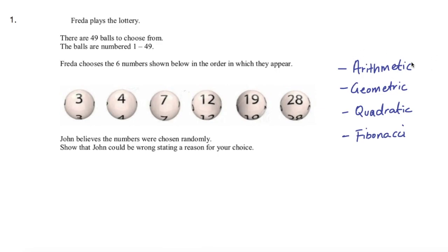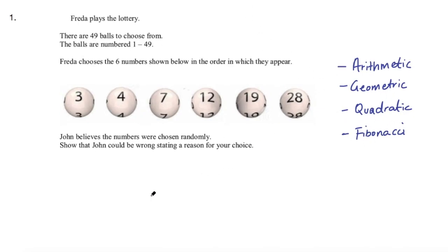There are arithmetic sequences, geometric sequences, quadratic sequences, and Fibonacci sequences. Arithmetic sequences are just adding the same number over and over again. For example, this might be an arithmetic sequence where I'm adding two each time: 2, 4, 6, 8, 10 — I keep adding 2 to the previous number.